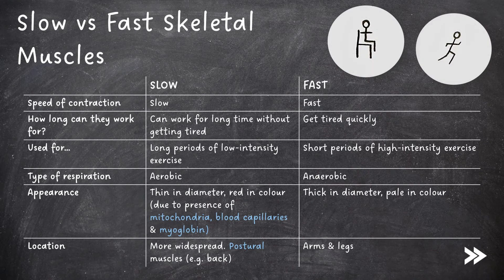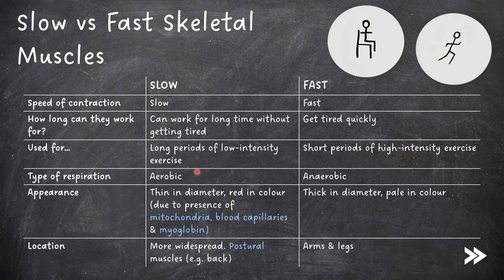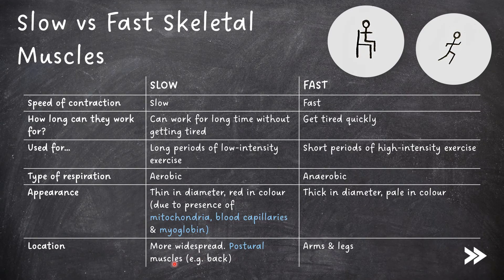Finally, we need to know about fast and slow skeletal muscle fibres. Slow skeletal muscle fibres contract slowly and can work for a long time without getting tired, whereas fast ones contract fast and get tired quickly. Slow fibres are useful for long periods of low intensity exercise, whereas fast fibres are useful for short periods of hard exercise. Slow fibres use aerobic respiration to generate ATP, whereas fast ones use anaerobic respiration. Slow skeletal muscle fibres are thin in diameter and red in colour due to mitochondria, blood capillaries, and the presence of myoglobin. Fast skeletal muscle fibres are thick in diameter and pale in colour. Slow fibres are more widespread and found in postural muscles such as the back, while fast fibres are found in places such as the arms and legs.